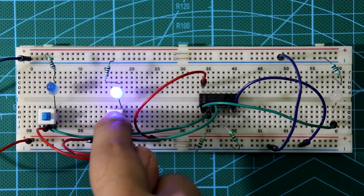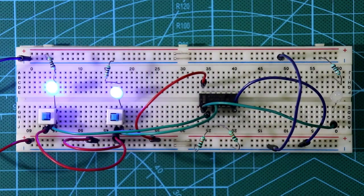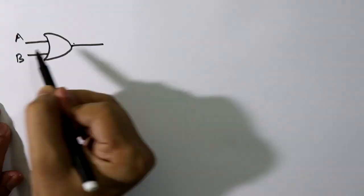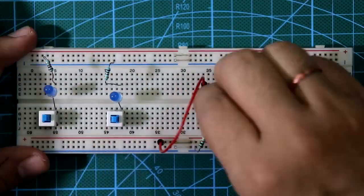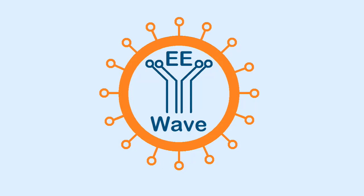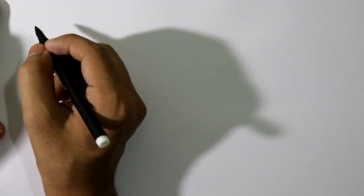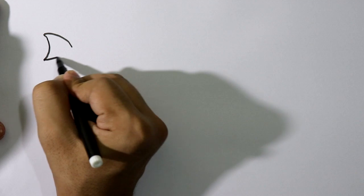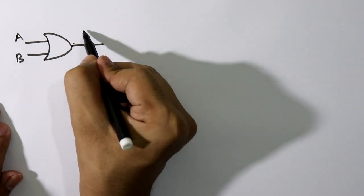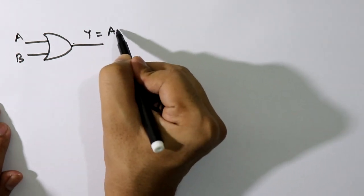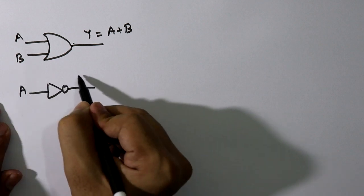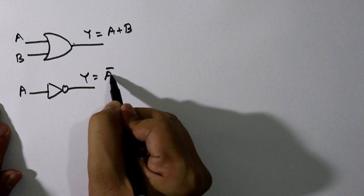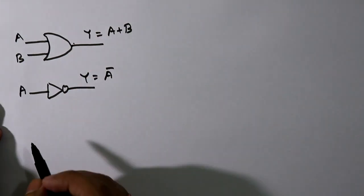Hello guys, today we are going to see NOR gate IC 7402, so let's get started. Let's see the symbol of OR gate. This is the OR gate with inputs A and B, and the output equals A plus B. The symbol of NOR gate has inputs and output Y equal to complement of A plus B. By combining these two gates we get NOR gate.